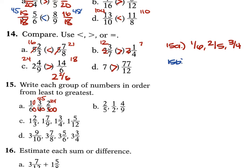For B, we have fractions with denominators 5, 2, and 9. Using LCD of 90: the fractions convert to 40 over 90, 45 over 90, and 36 over 90. So least to greatest: 36 over 90 (which is 2 fifths), then 40 over 90 (4 ninths), then 45 over 90 (1 half).